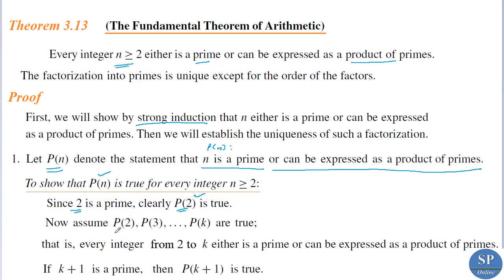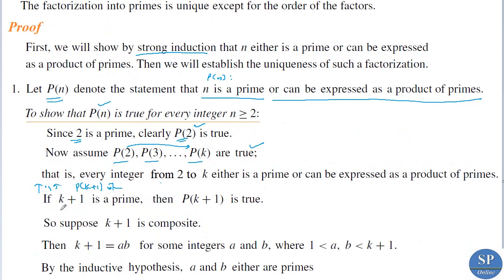Now assume that P(2), P(3), …, P(k) are all true — that is, every integer from 2 to k either is a prime or it can be expressed as a product of primes. That is the inductive assumption. We have to show that P(k+1) is true, i.e., k+1 is either a prime or can be expressed as a product of primes. If k+1 is a prime, then P(k+1) is true.